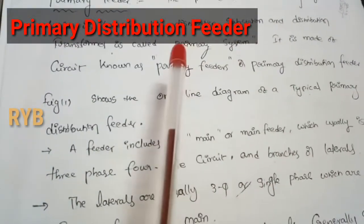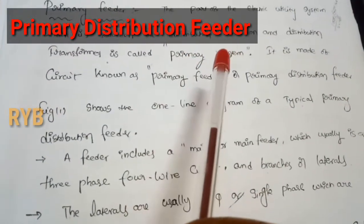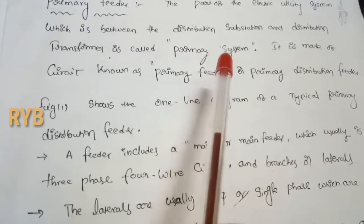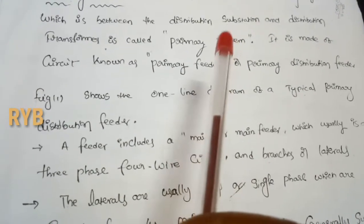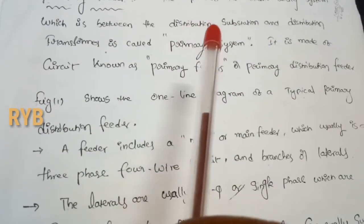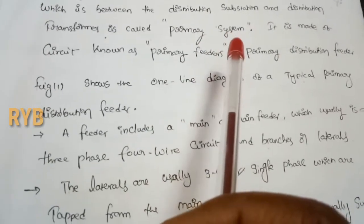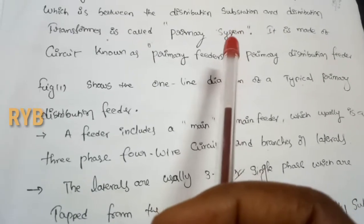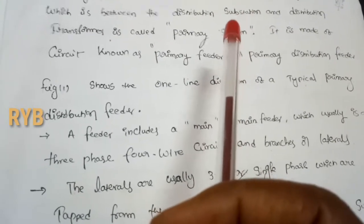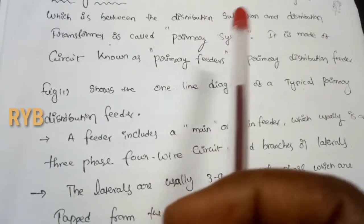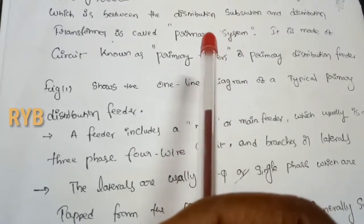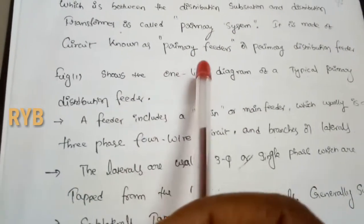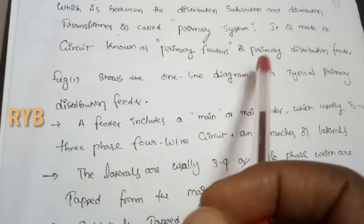The part of the electric utility system which is between the distribution substation and the distribution transformer is called the primary distribution system. The primary feeder comes under the primary distribution system. This portion is made up of a circuit known as the primary feeder or primary distribution feeder.